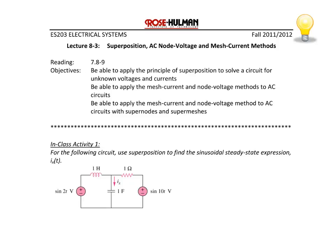Today's lecture is on superposition and the AC node voltage and mesh current methods, covering sections 7.8 and 7.9 in the reading. At the conclusion of today's lecture, students should be able to apply the principle of superposition to solve a circuit for unknown voltages and currents, as well as apply the mesh current and node voltage methods to AC circuits, including circuits with supernodes and supermeshes.